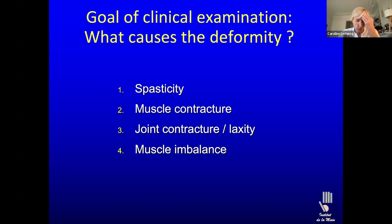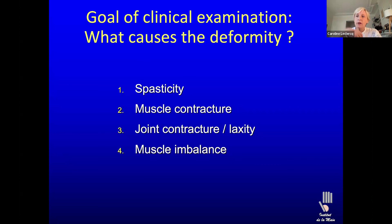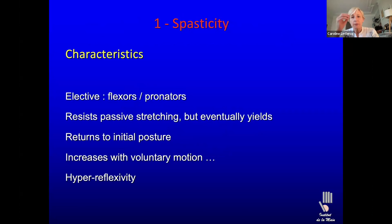Where it becomes very difficult is for the fingers. You can see a few of the different deformities linked to spasticity of the fingers — it can be finger clawing, it can be boutonnière, it can be intrinsic plus hand. And the thumb is often in adduction or flexion and adduction — this is the so-called thumb-in-palm deformity.